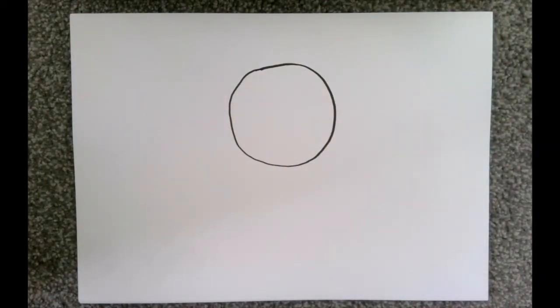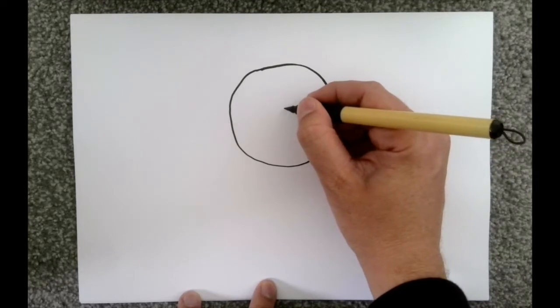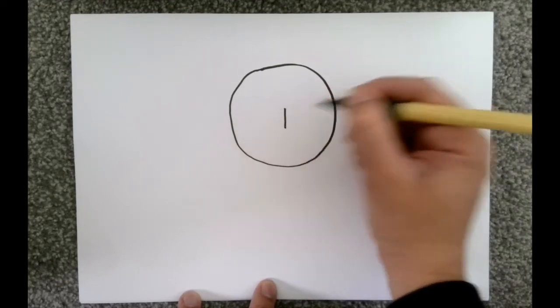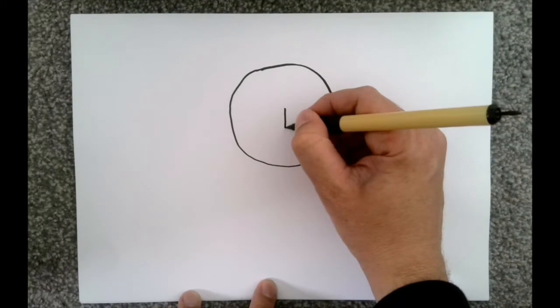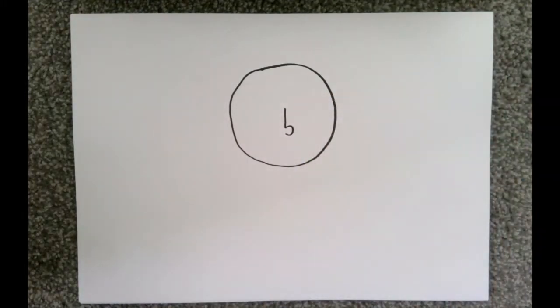And as ever, what we'll do next is we'll do the nose. So it's a straight line down, remember? And then at the bottom, it's like a backwards C shape. Just like that.